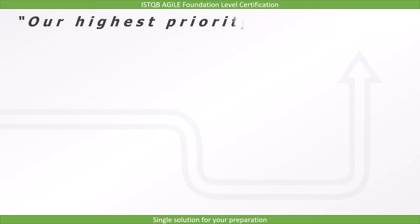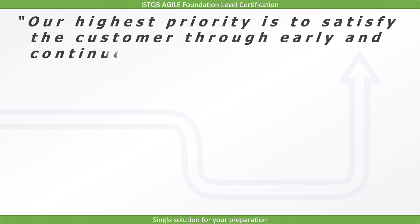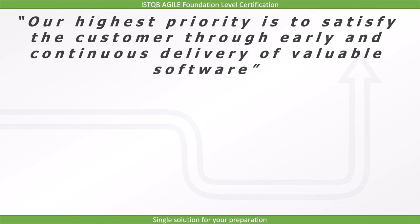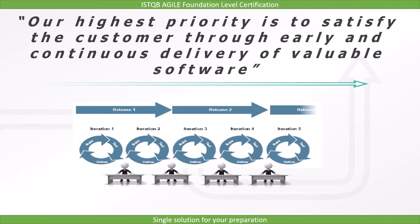The first principle is: our highest priority is to satisfy the customer through early and continuous delivery of valuable software. In an Agile project, the iterations are of small duration, and it focuses on delivering working software to the customer after each iteration. This helps in satisfying the customer as they can see if the software is developed as per their expectation or not.